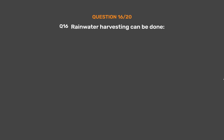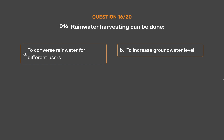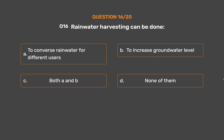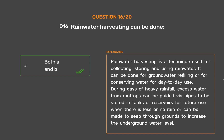Question number 16. Rainwater harvesting can be done _____. Option A: To conserve rainwater for different uses. Option B: To increase groundwater level. Option C: Both A and B. Option D: None of them. The correct answer is Option C: Both A and B. Rainwater harvesting is a technique used for collecting, storing, and using rainwater. It can be done for groundwater refilling or for conserving water for day-to-day use. During days of heavy rainfall, excess water from rooftops can be guided via pipes to be stored in tanks or reservoirs for future use, or made to seep through the ground to increase the underground water level.